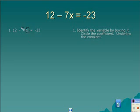Second part, we're going to circle the coefficient. Notice that I'm circling the negative sign with the 7. Finally, we're going to underline the constant.